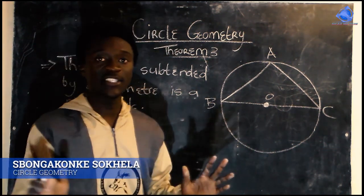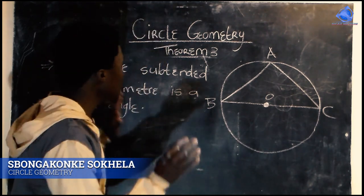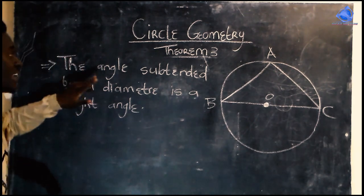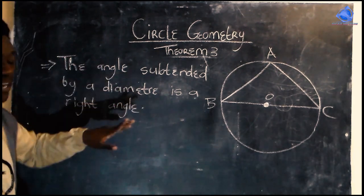Okay, now we are going to talk to you. We are going to talk to you about the theorem. The angle subtended by a diameter is a right angle.